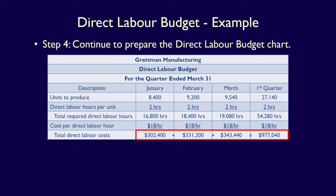We can also do a quick check to ensure our total direct labour costs are correct by adding the totals for each month: $302,400 + $331,200 + $343,440 = $977,040. That means our direct labour budget is perfect.